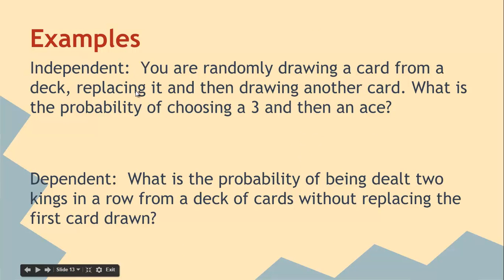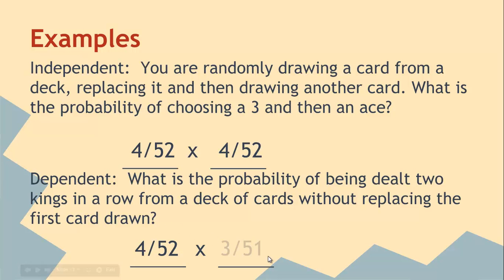You're randomly drawing a card from a deck, replacing it, then drawing another card. What's the probability of choosing a three then an ace? Well, for the first card, it could be the probability of drawing a three, which is 4 out of 52. Then draw an ace. Since we're replacing the first card, it's again 4 out of 52. What is the probability of being dealt two kings in a row, a king and then a king? If you don't replace, well, the first way it's 4 out of 52 because it's 4 kings out of 52. But the second probability is no longer 4 out of 52 because there's not 4 kings left in the deck, there's 3, and there's not 52 cards in the deck, there's 51. And so that's what we mean by conditional probability.